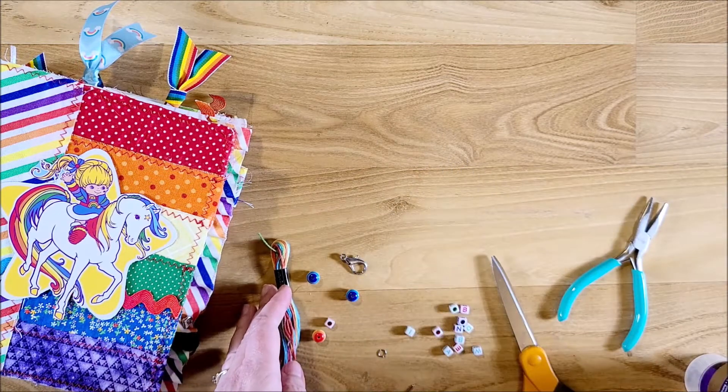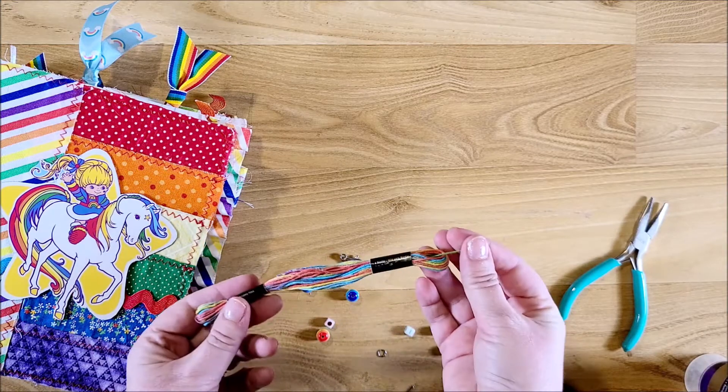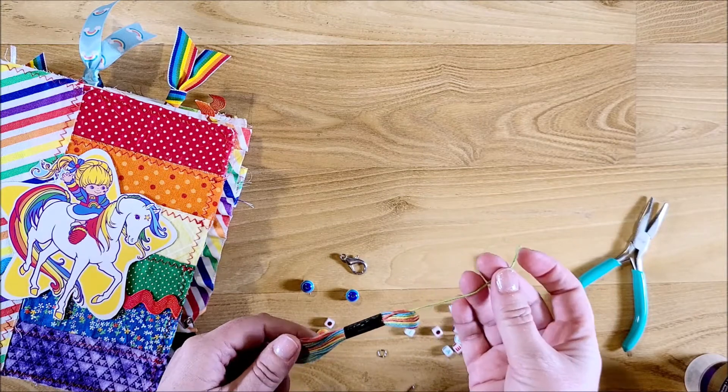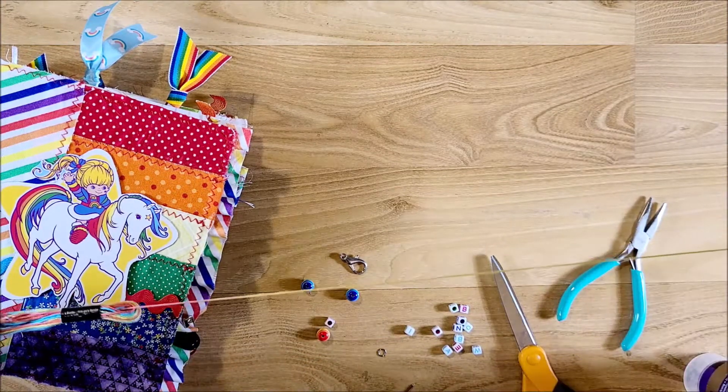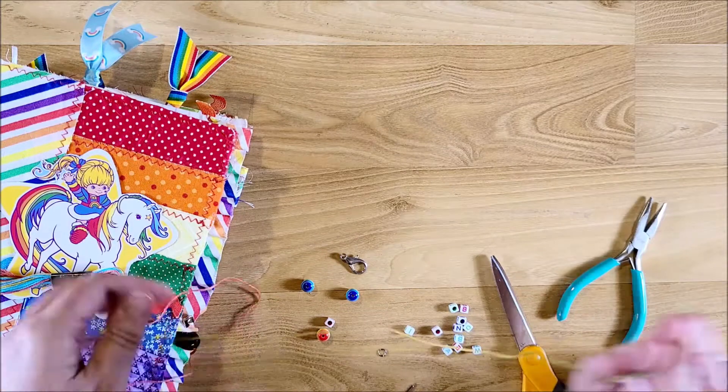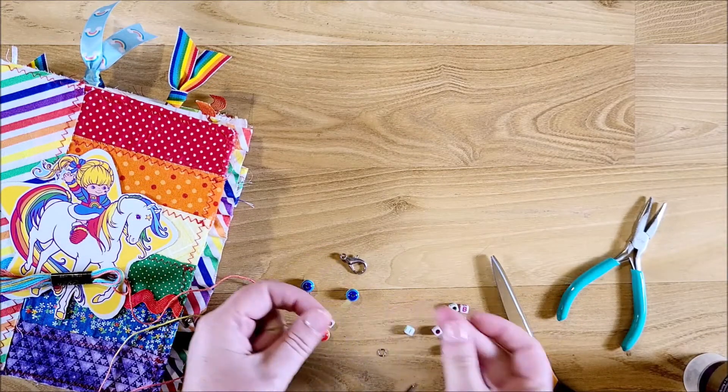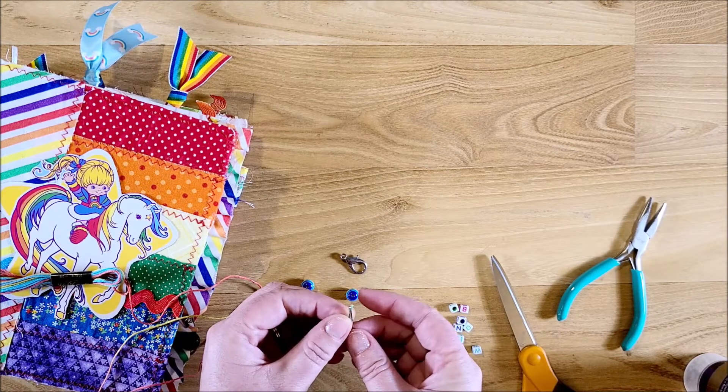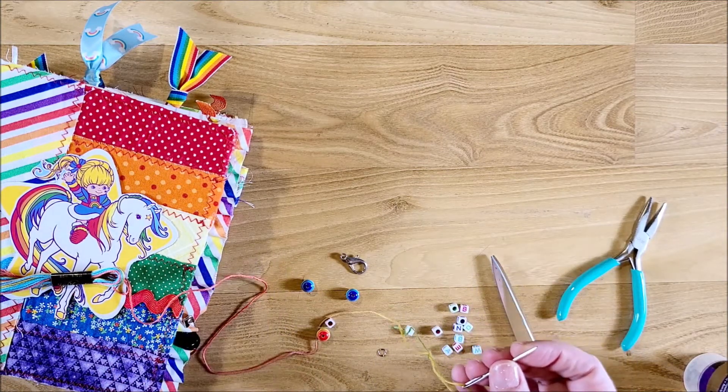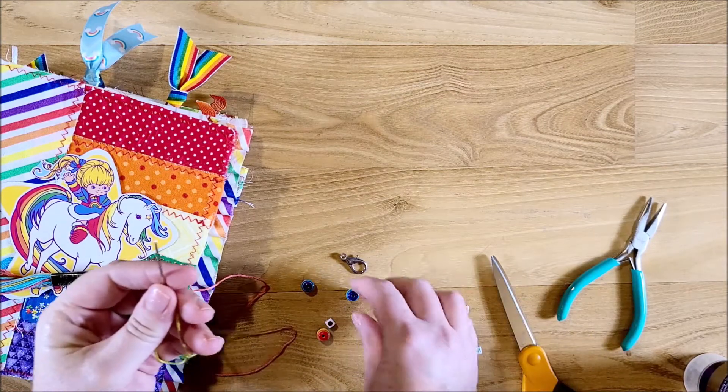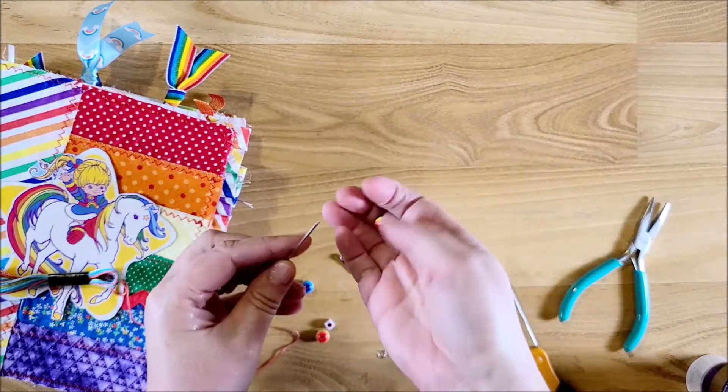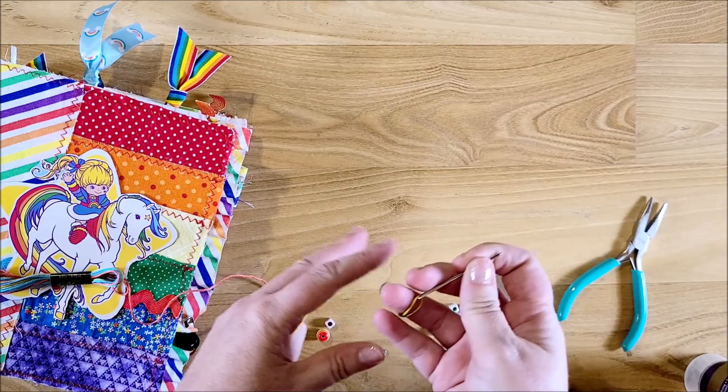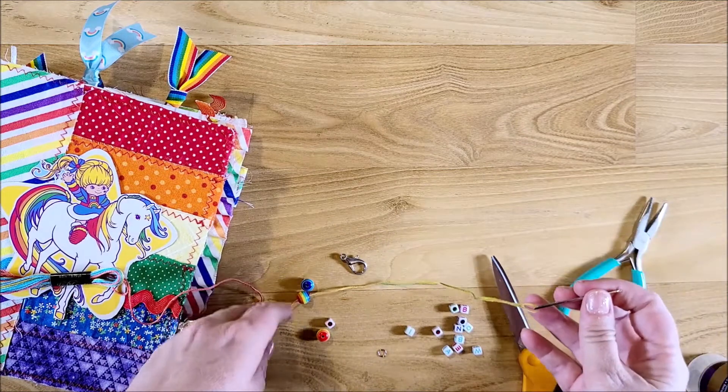So we're going to go ahead and take a piece of your embroidery thread. I didn't really measure it out. I just pulled a pretty long piece out. I didn't cut it yet until after I had all of my beads on. So go ahead and stick one end through your needle. And then you're going to take one of the round beads and go through that. Just pull it all the way through.